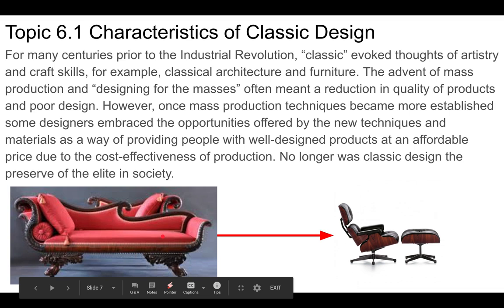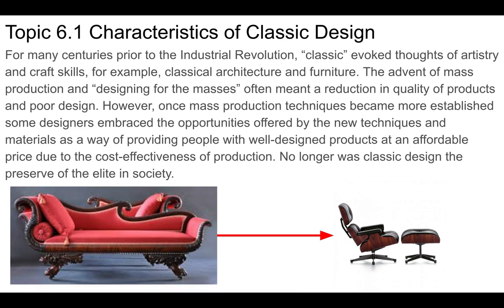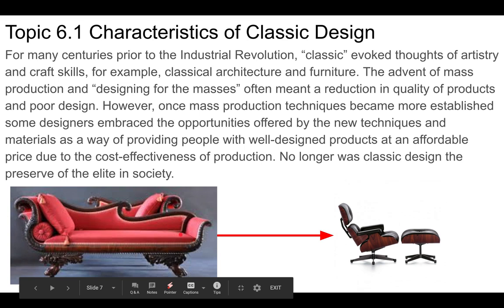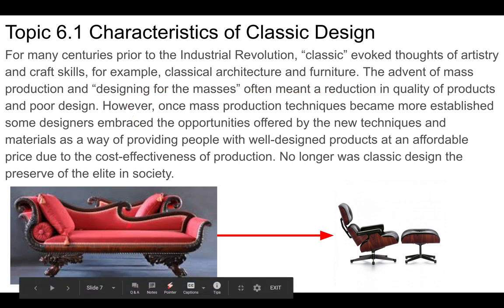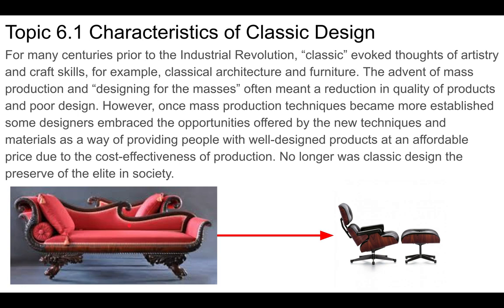Mass production made classic design no longer exclusive to the wealthy. Expensive traditional furniture is made from costly woods and fabrics. By contrast, the Eames chair — a true design classic — is made from aluminum legs and bent plywood, designed for mass production and affordability. Before the Industrial Revolution, expensive furniture was made for elites; the poor had very rough furniture and very little of it.